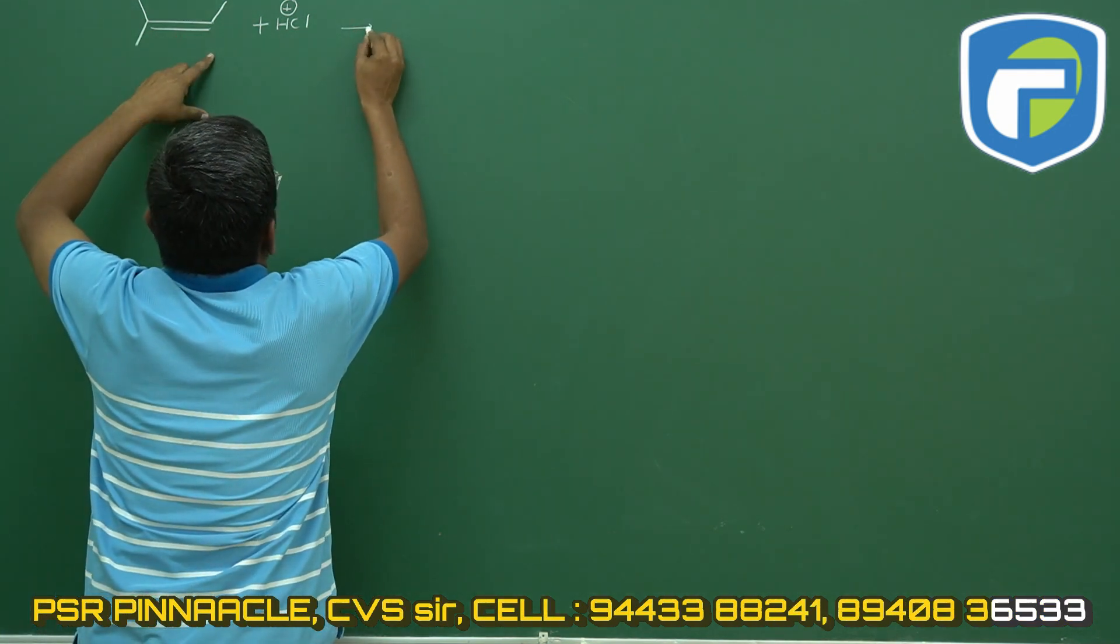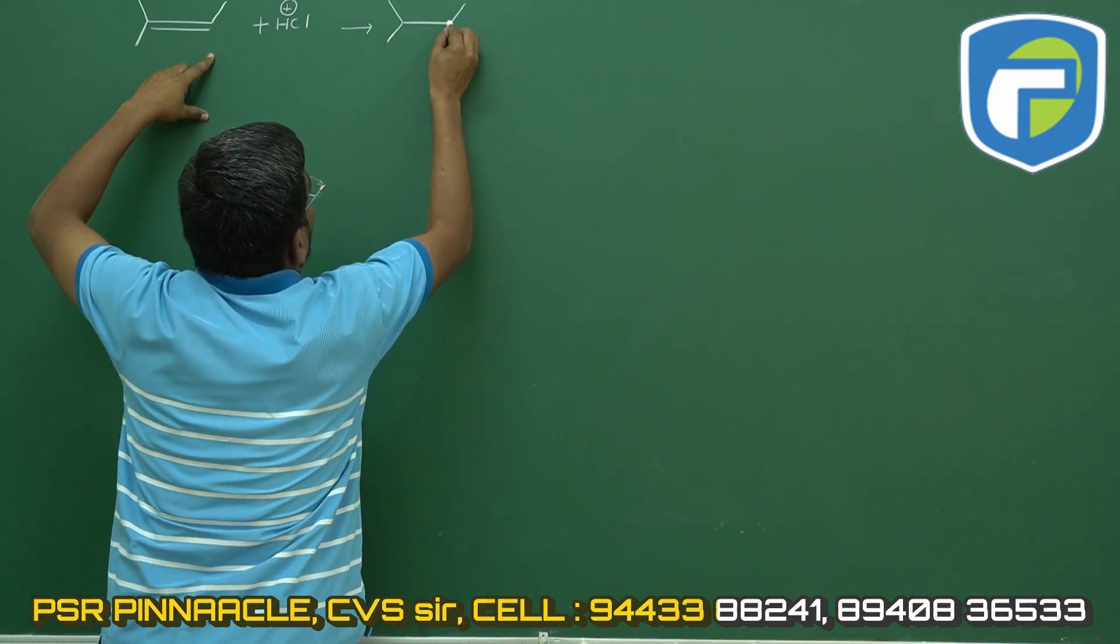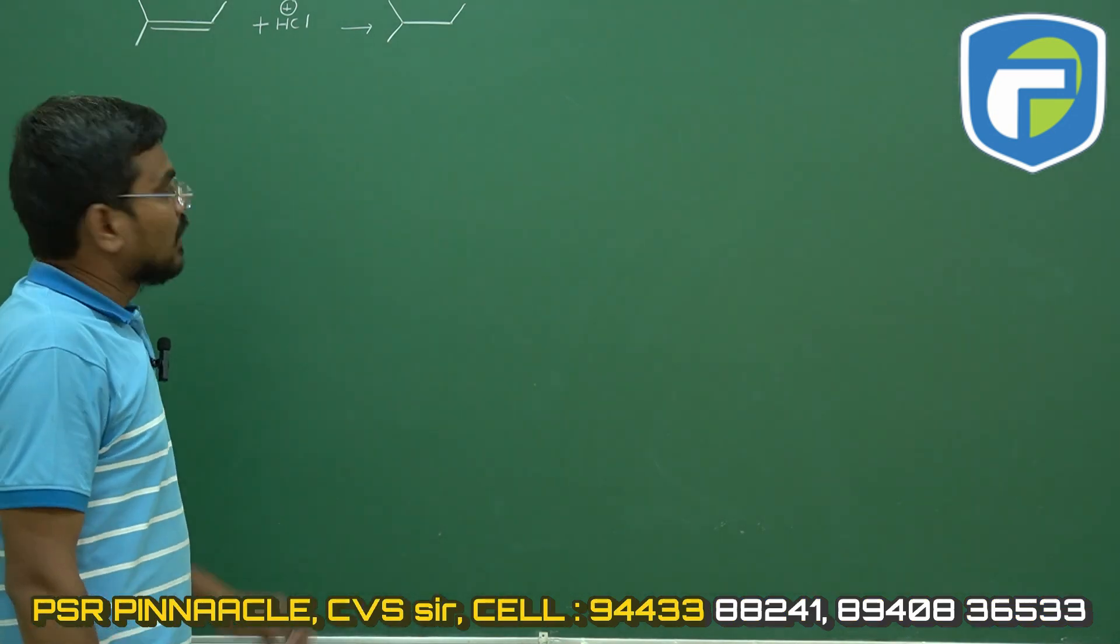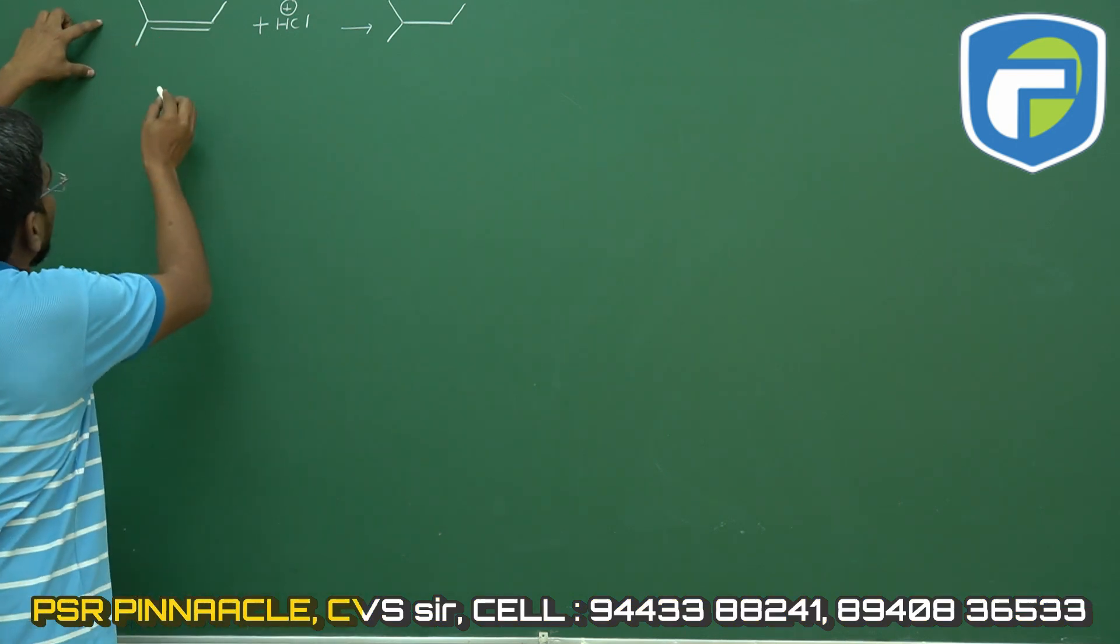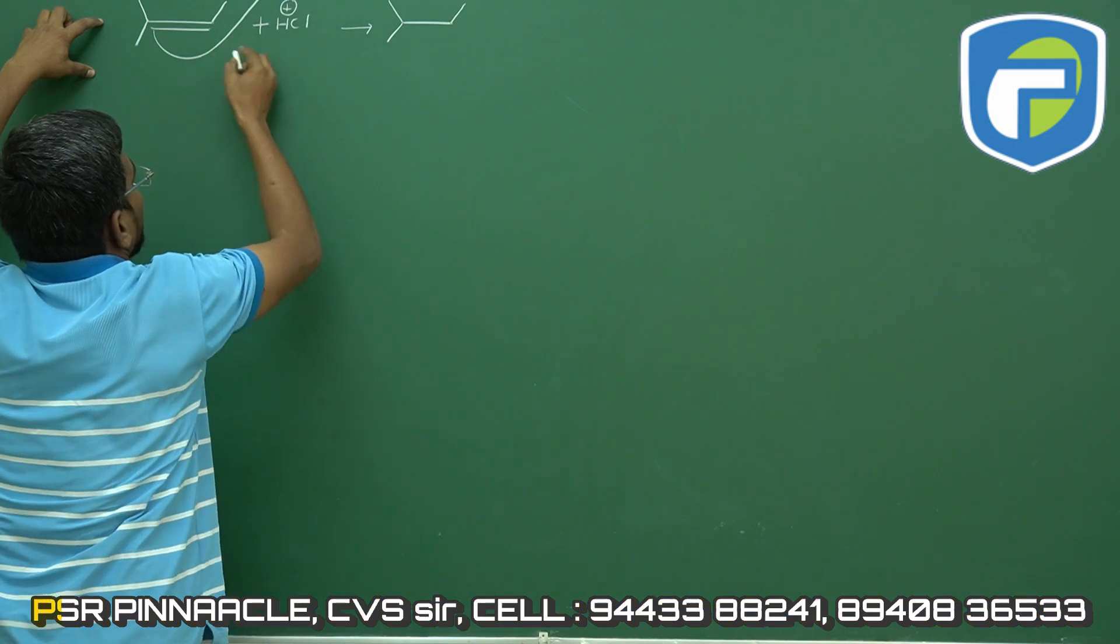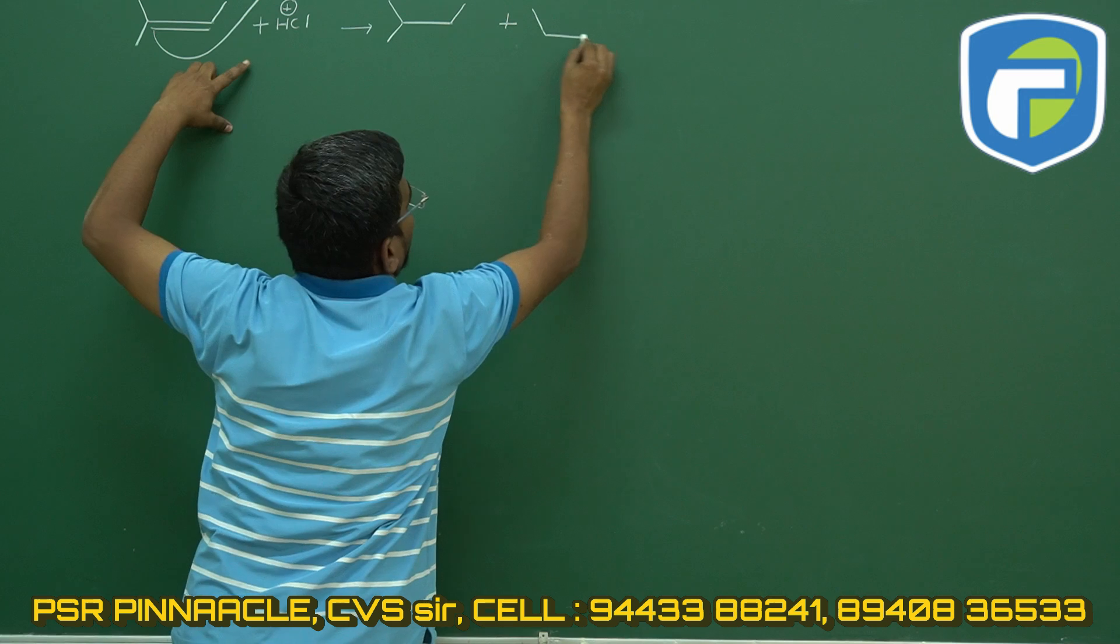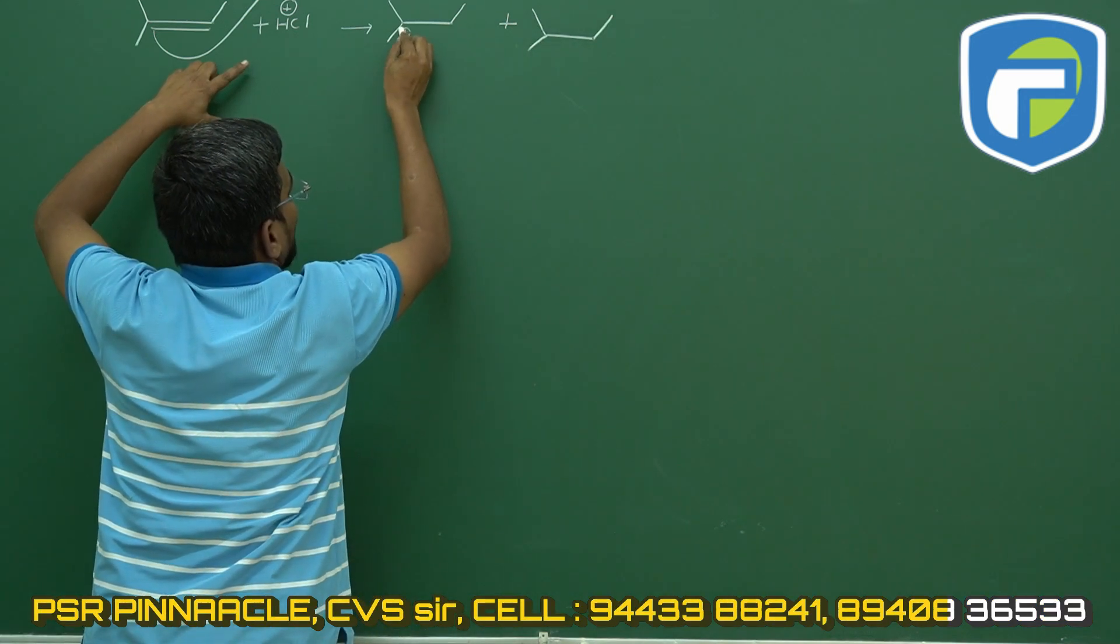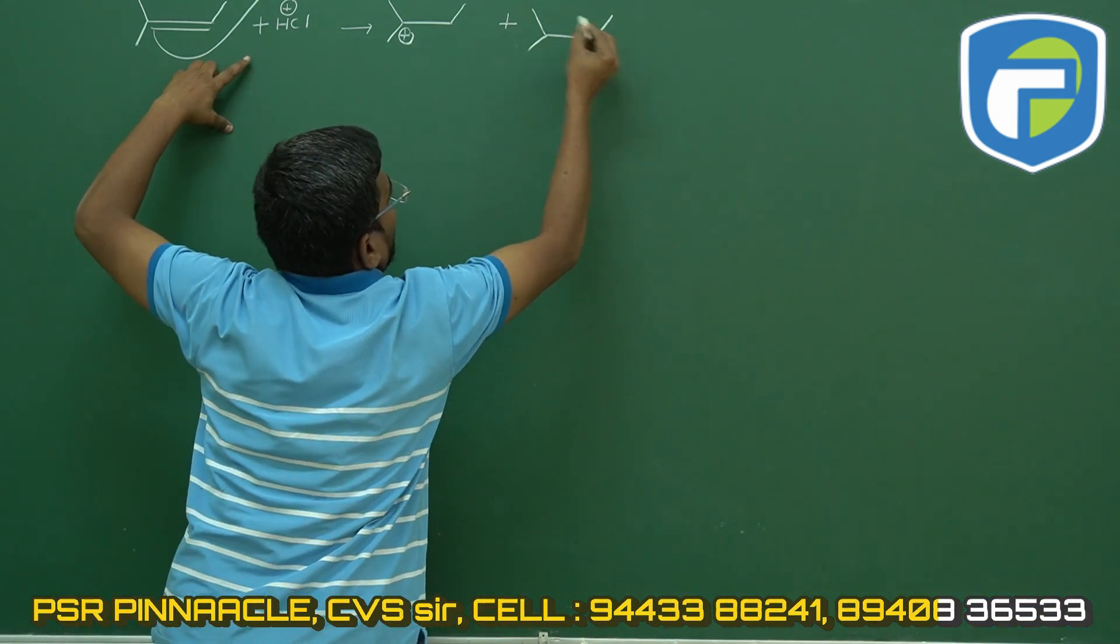So once this electrophile is added to this alkene, there are two possibilities to attack over this substrate. One possibility this side, the other possibility I will write over here. After placing the carbocation, one is over this carbon and one is over this carbon.